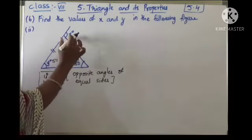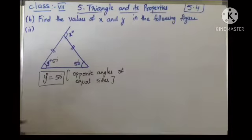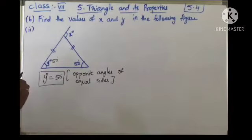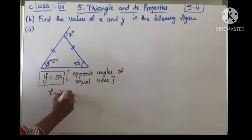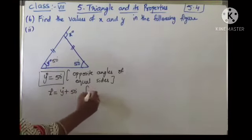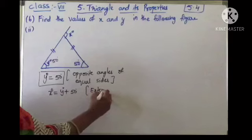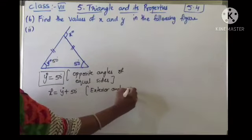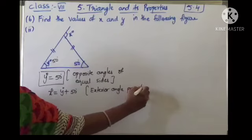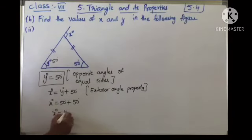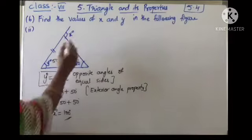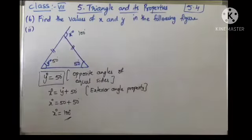Now y is 50. Using the exterior angle property: the exterior angle equals the sum of the two opposite interior angles. So x degrees is nothing but y plus 50, which is 50 plus 50 equals 100 degrees. So finally we got the value of x as 100 and y as 50.